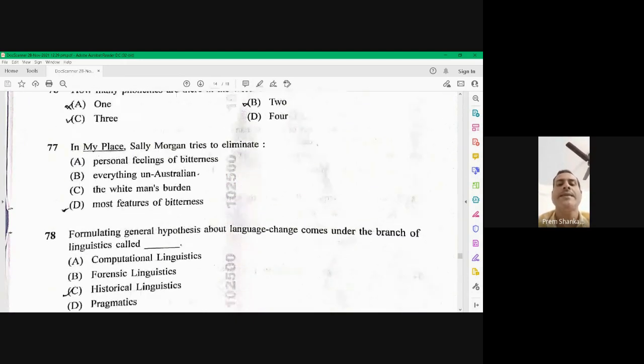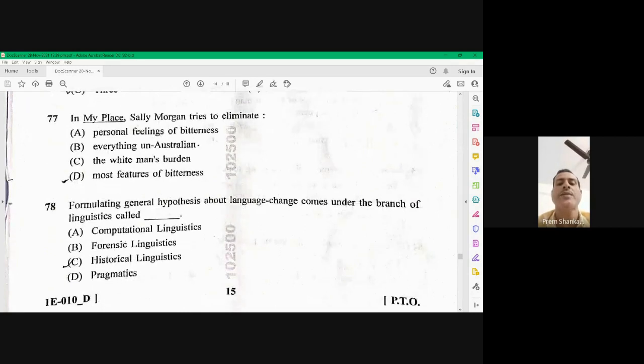Question number 78. Formulating general hypothesis about language change comes under the branch of linguistic called as historical linguistic. Historical linguistic is the right option here.